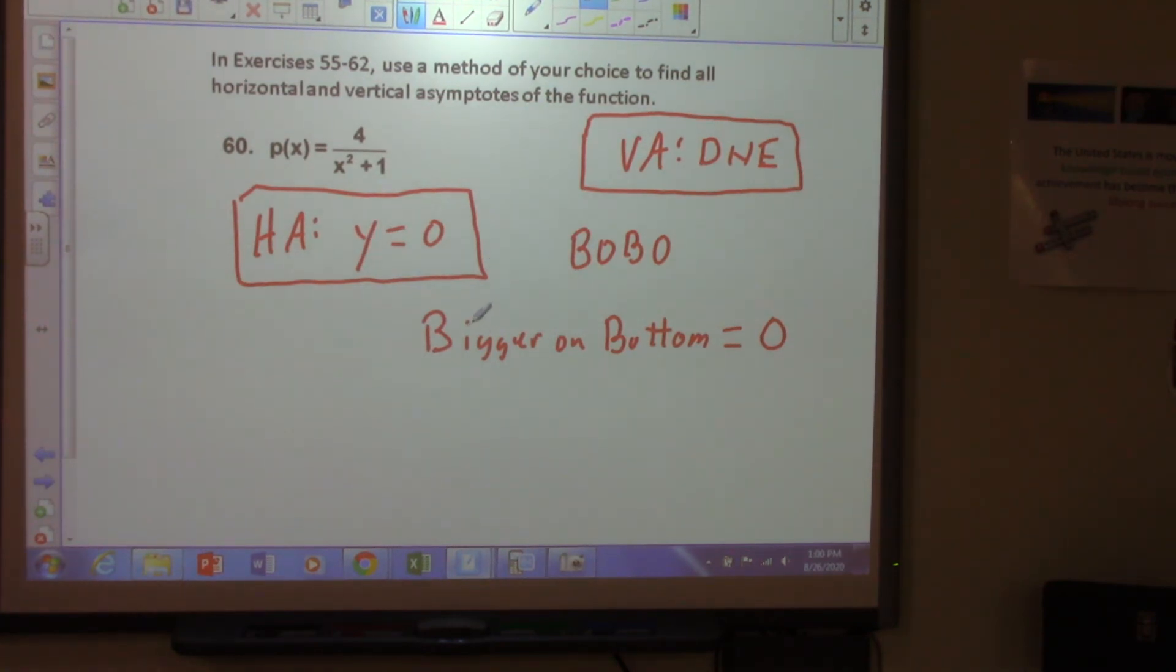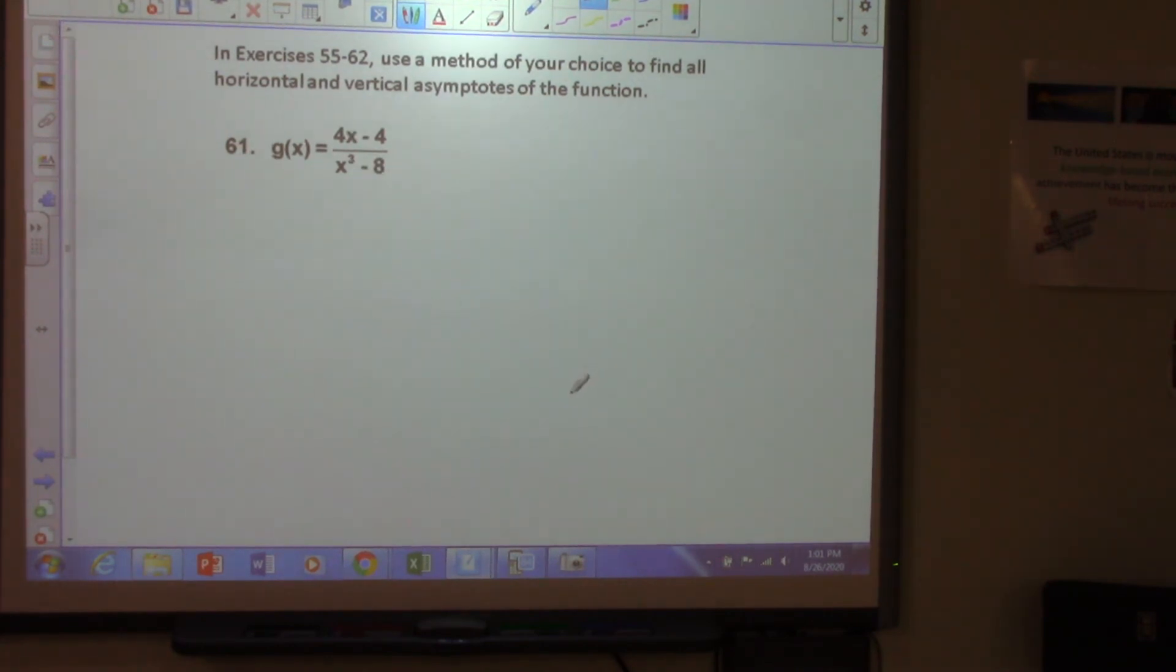Here, you see we have a bigger function on bottom, right? We have 4x to the zero power over x squared, so we are bigger on bottom, which means that we are going to go toward zero as we go toward infinity. Because right on the y-axis, we would have 1, we'd have 4 over 2 or 2, right? We'd have 4 over 2 or 2, but then we would go like this. And then on the left, we would go like this. Is that what you saw when you graphed it? If you graphed it, yes you did.